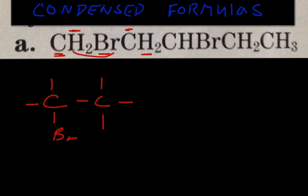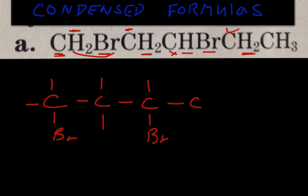You move on to the third carbon. You write it down first and look in front of it — it has an H and a Br on it. This line represents H, and this line represents Br. You move on to the fourth carbon. You write it down; you see H2 in front of it, so one H goes to the top and one H goes to the bottom. The H cannot be inside the parent. And last but not least is the CH3 at the end — carbon and three hydrogens — and you're done.